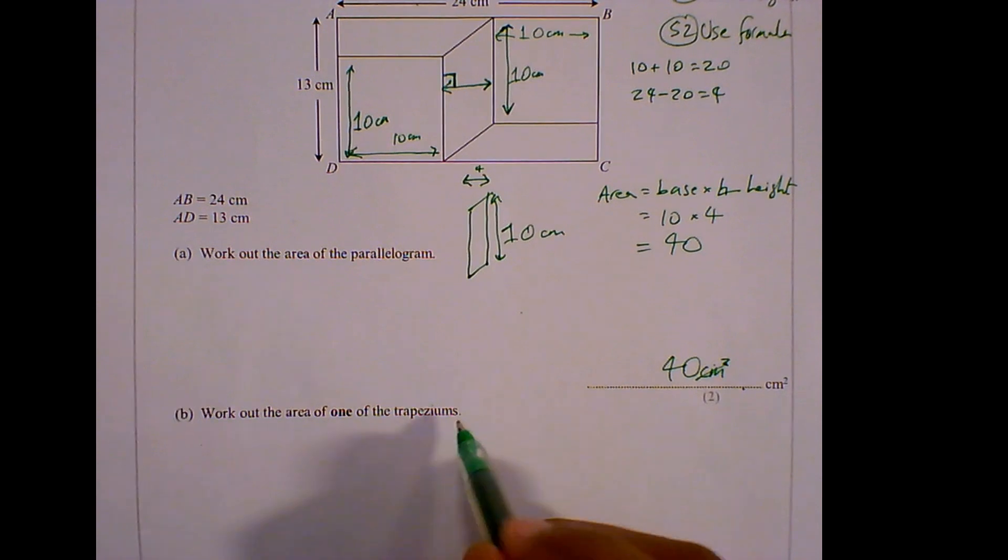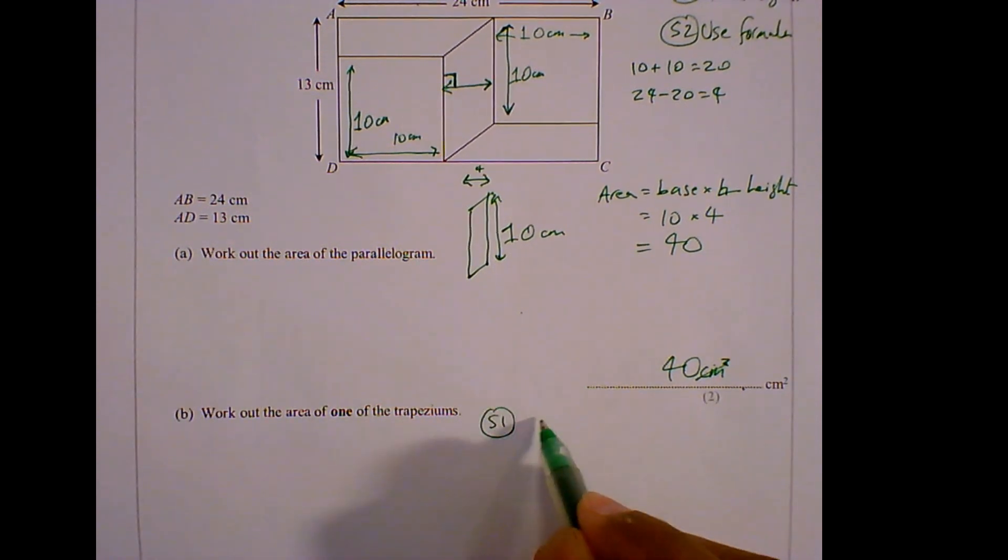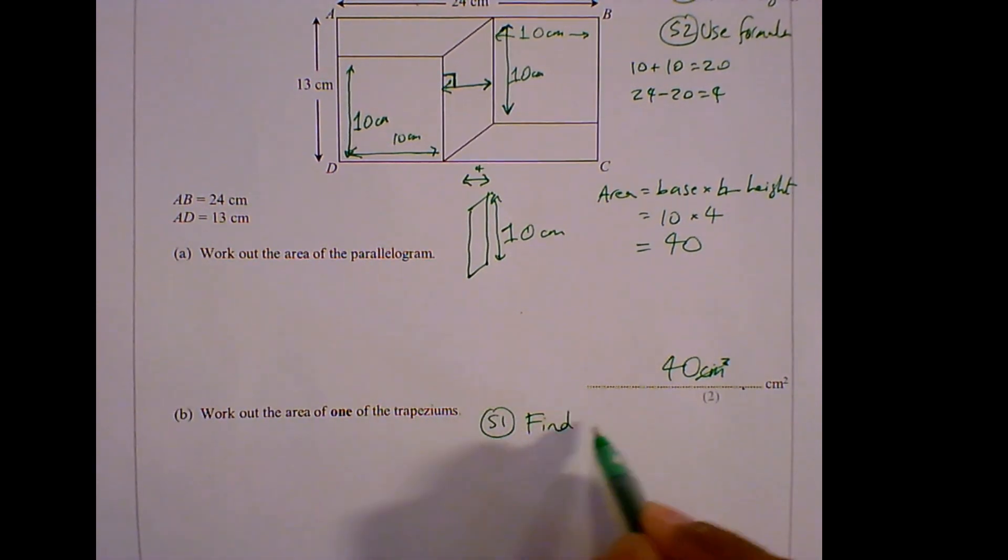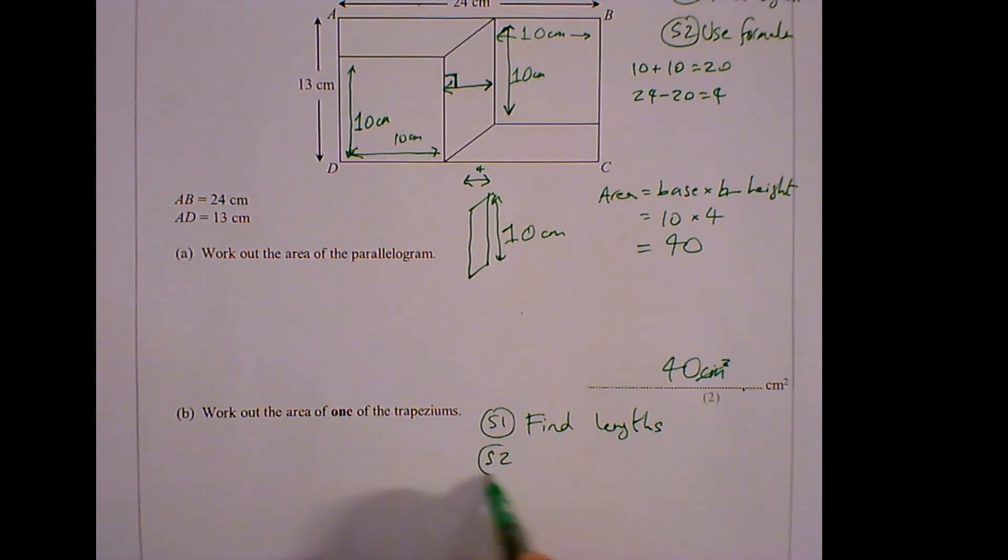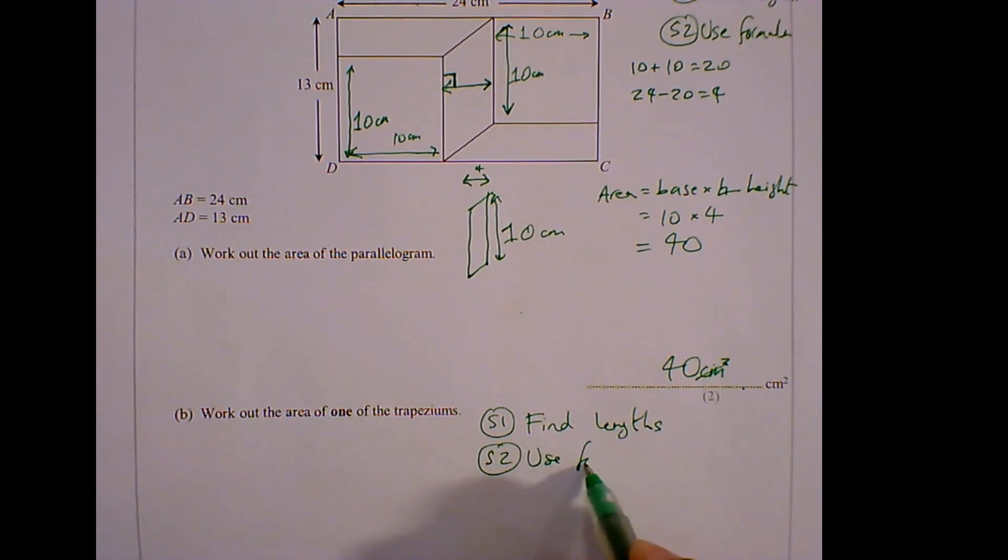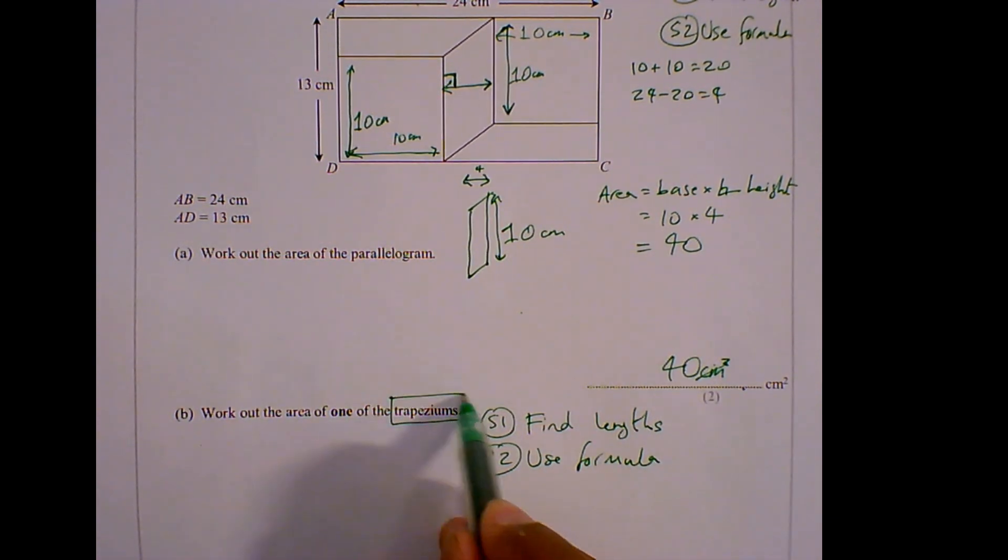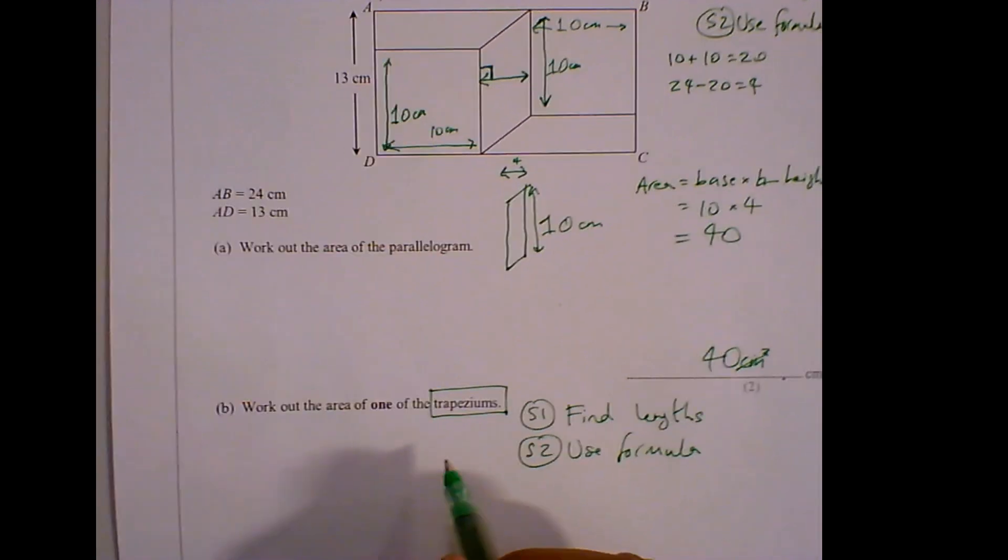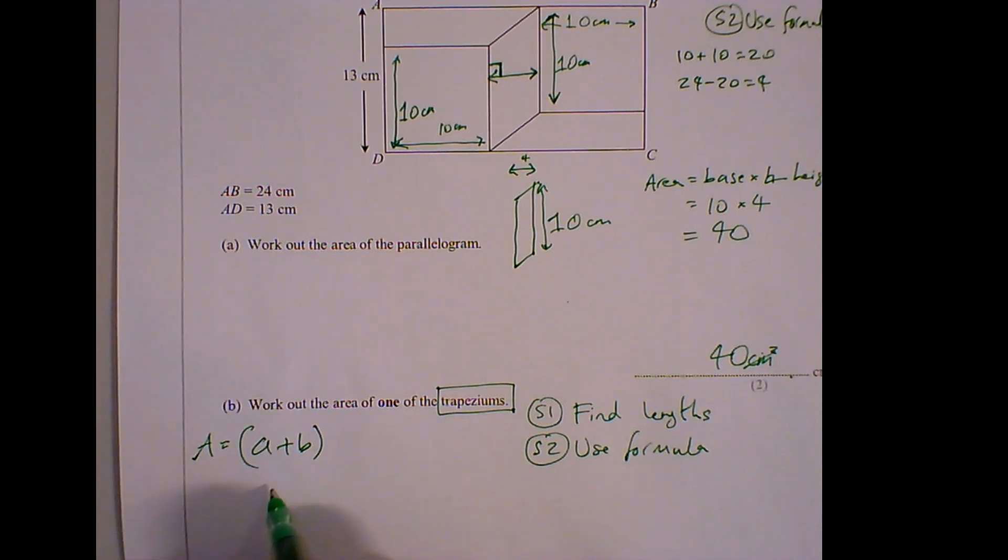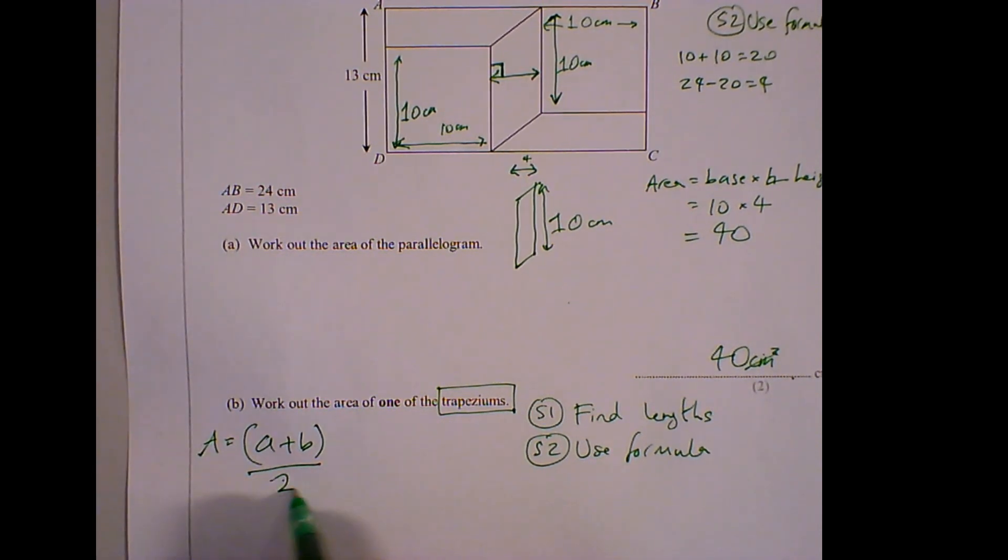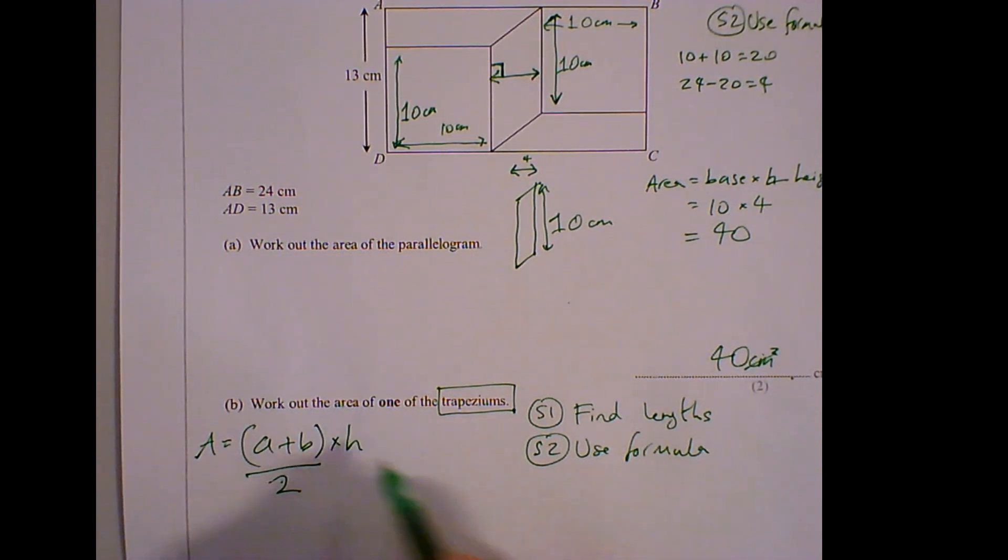So again, step one is to find the lengths and then step two is to use the formula. Now the formula for a trapezium is we add the parallel sides A plus B. So area equals A plus B, and I divide it by 2, and then I multiply by the height.